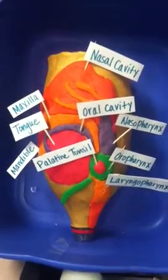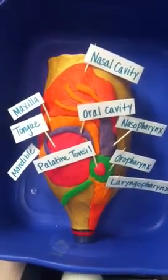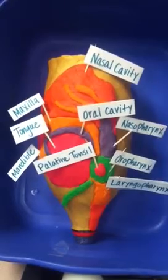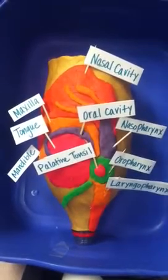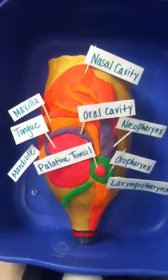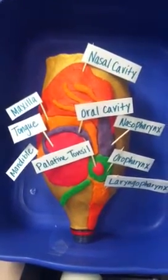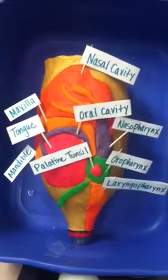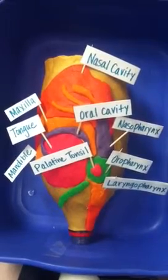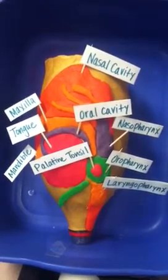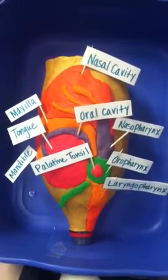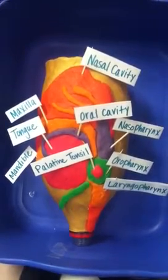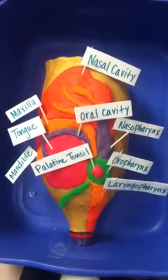This is a model of the oral cavity, nasal cavity, and pharynx created by Rachel Daniel and Tiffany Smith for the class Anatomy and Physiology for Speech and Hearing. The oral cavity, nasal cavity, and pharynx are part of the anatomy of articulation and resonation.